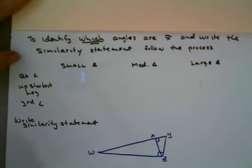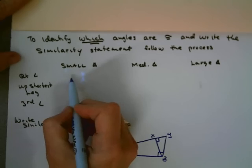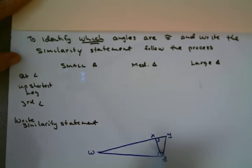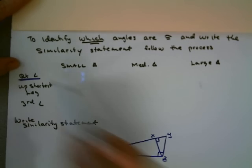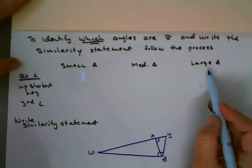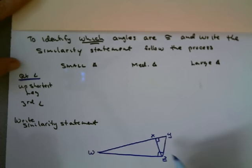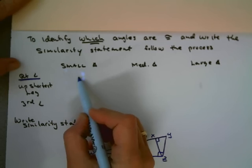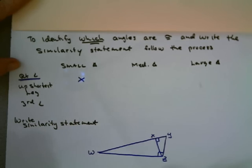So the first thing we'll do, we're going to look at our right angle. And we're going to look at our small triangle, compare it to the medium, compare it to the large. Small triangle, right angle is X. Medium triangle, right angle is X. And large triangle, the right angle is Z.